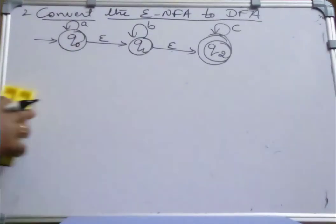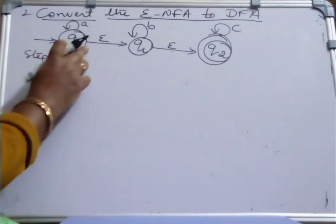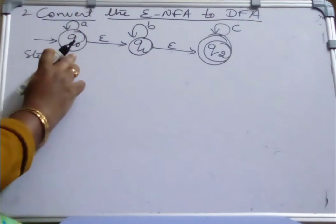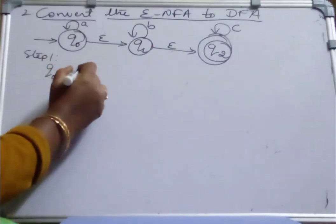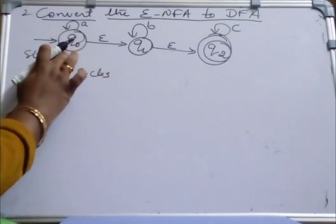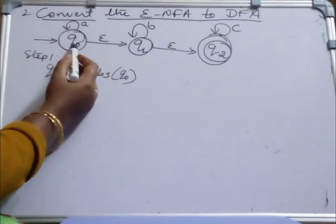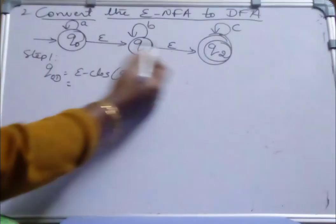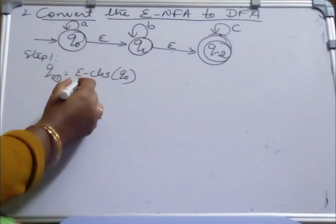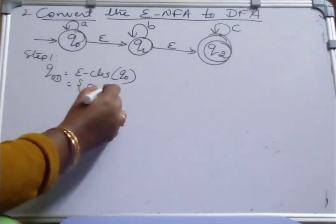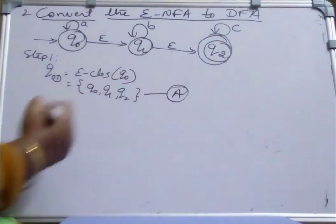How to convert this NFA to DFA? Step 1: whatever is the starting state for the NFA, that will also be the starting state for the DFA. So the starting state of the DFA, Q0D, is equal to Epsilon closure of the starting state of the NFA, that is Epsilon closure of Q0. Epsilon closure of Q0 is {Q0, Q1, Q2}. This is the new state we have identified — name this state as A.